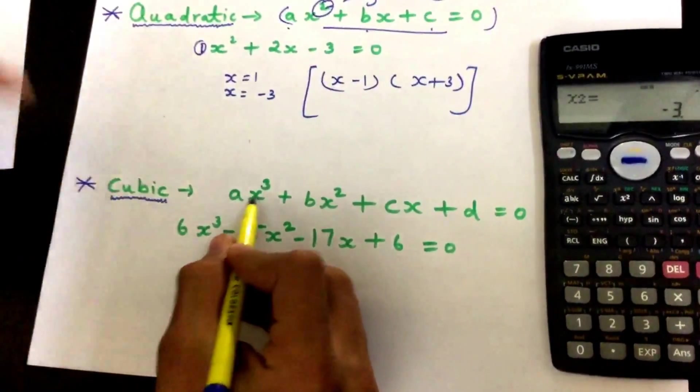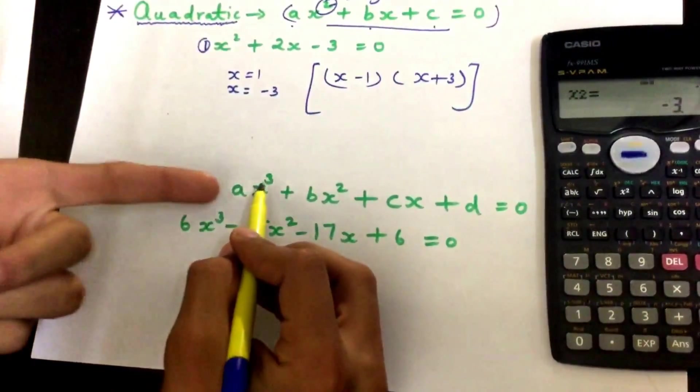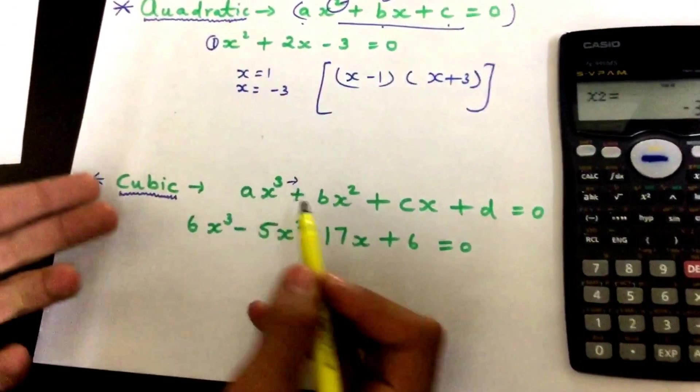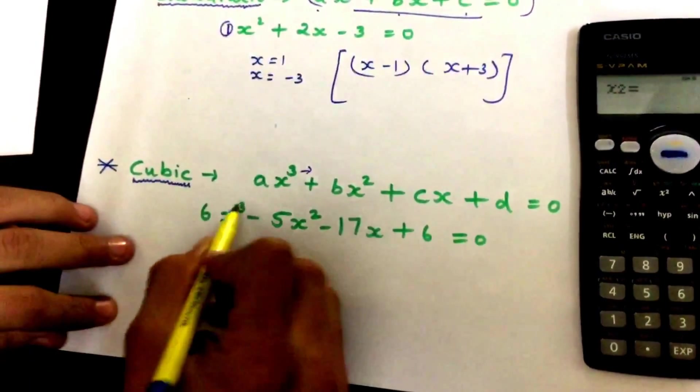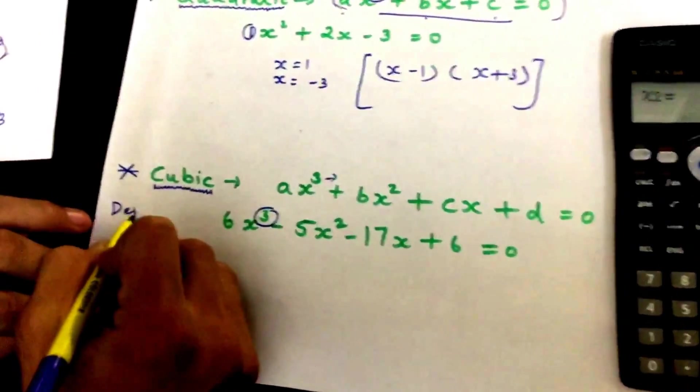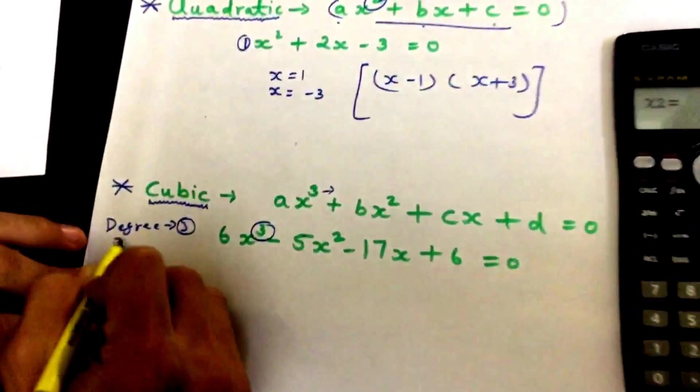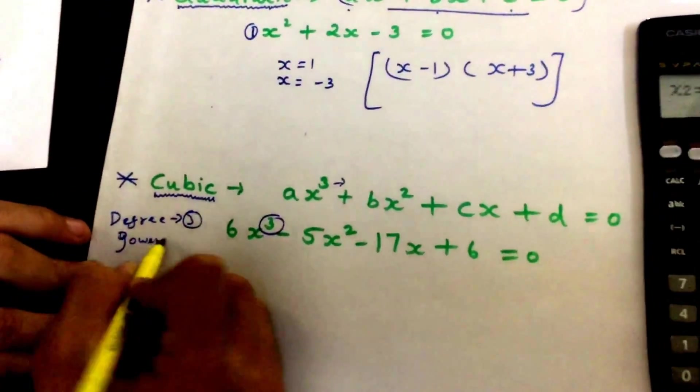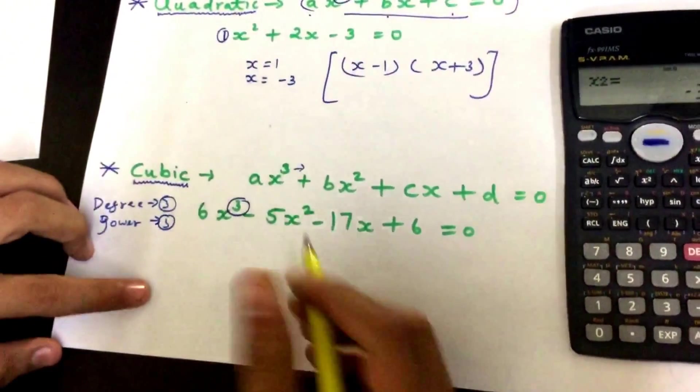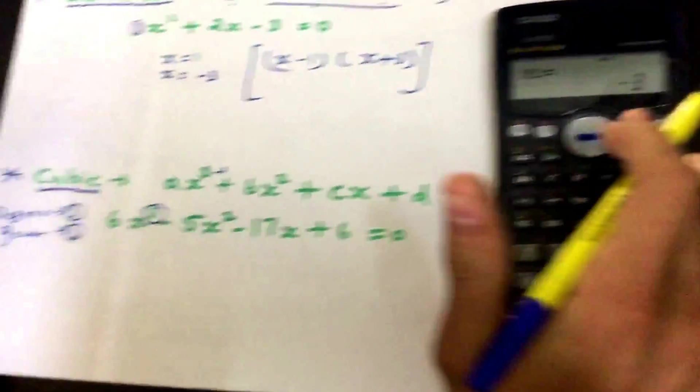It's the same as quadratic equations, but we've got degree three here. It's increased by one degree, and now it's degree three, or you can say power three. Now I'm going to do the same thing. Press mode three times.